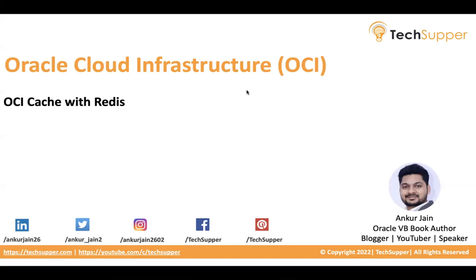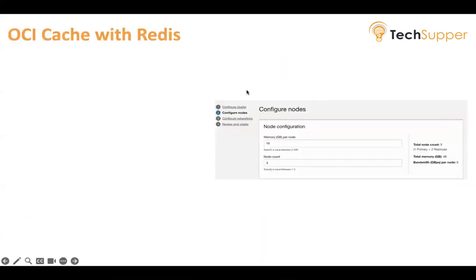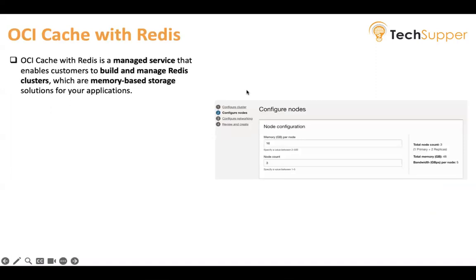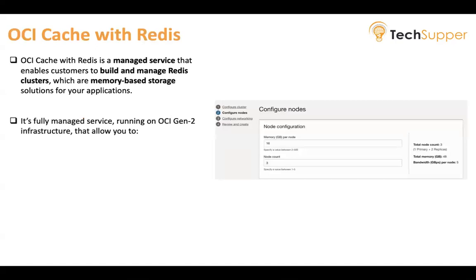Oracle Cloud Infrastructure Cache with Redis is a comprehensive managed in-memory caching solution built on the foundation of open-source Redis. OCI Cache with Redis is a managed service that enables customers to build and manage Redis clusters, which are memory-based storage solutions for any application. This fully managed service accelerates data reads and writes, significantly enhancing application response times and database performance.